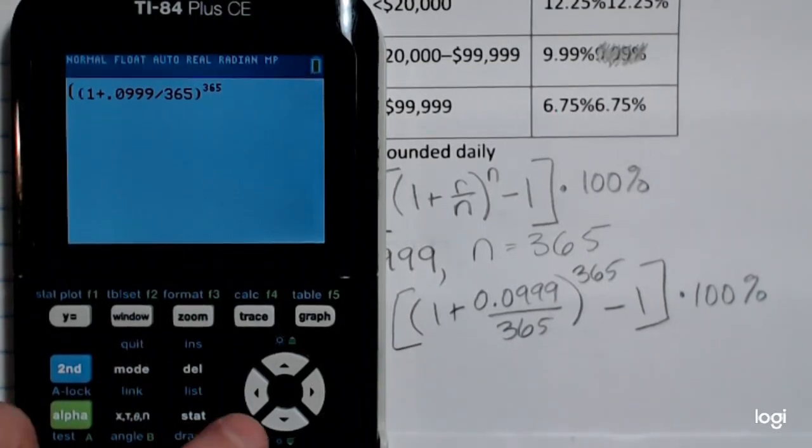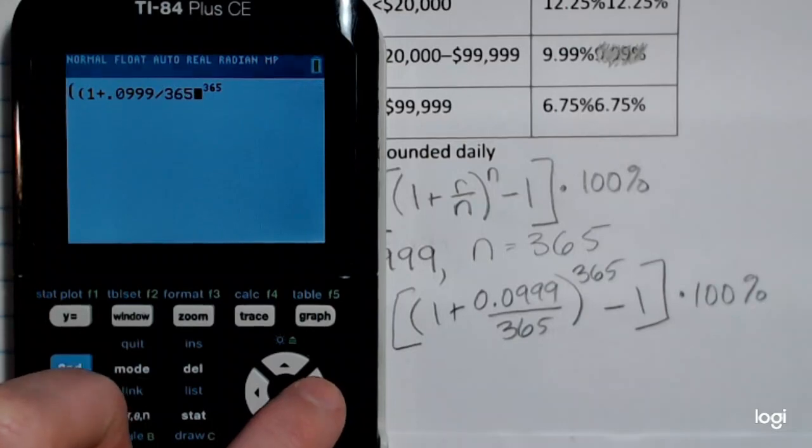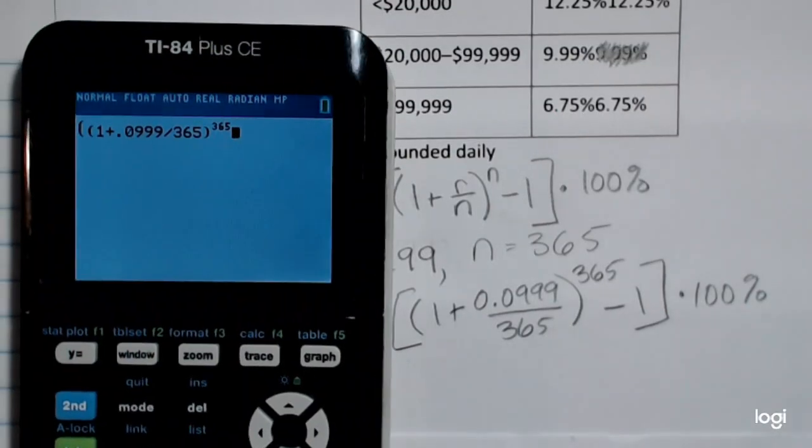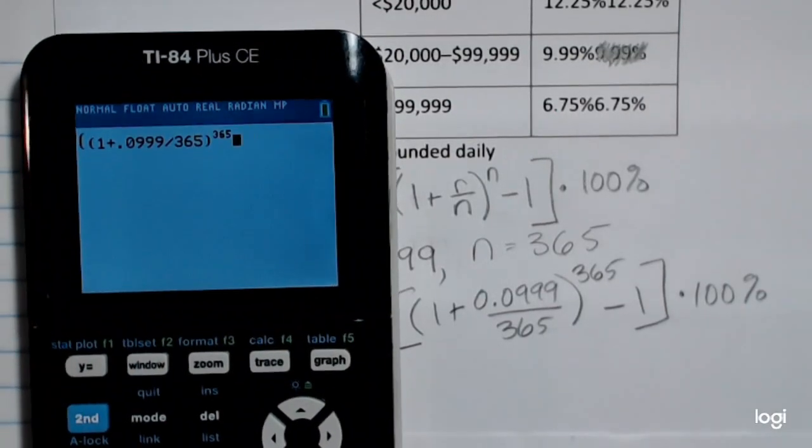I could still have done it this way, but then I would have to press enter, get my answer, then subtract 1. So I'm out of the exponent, I want to subtract 1.